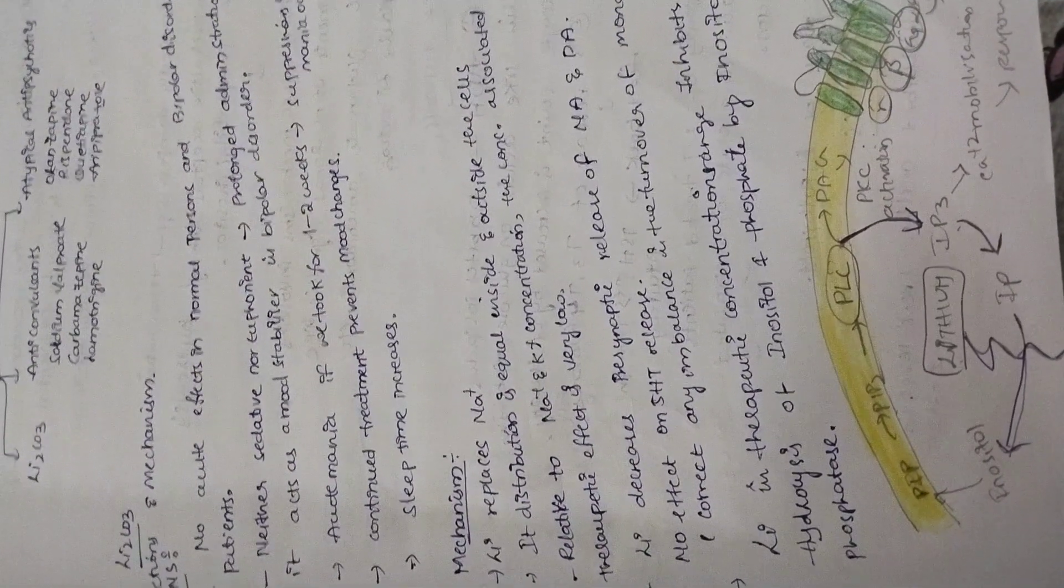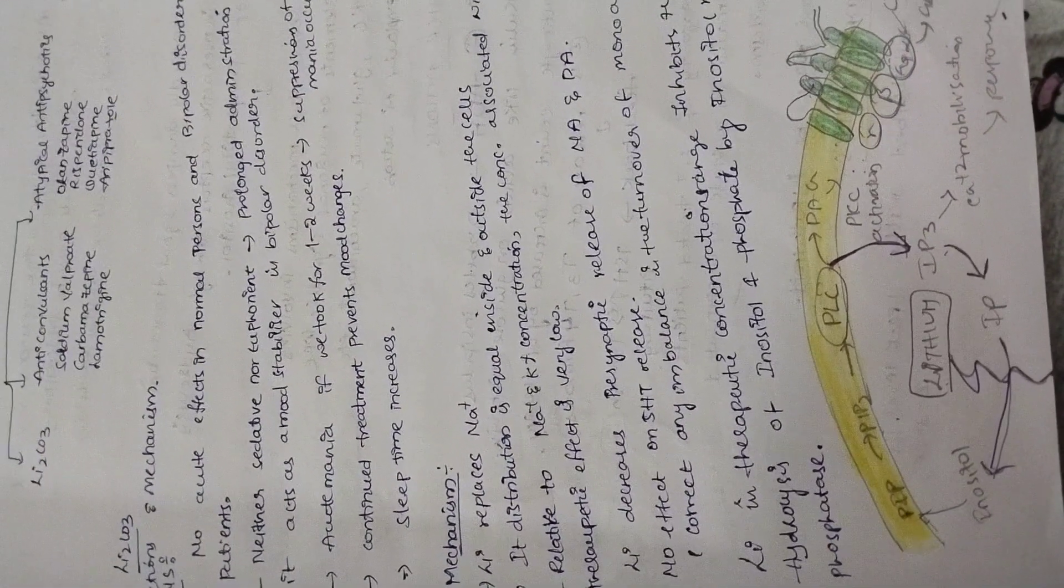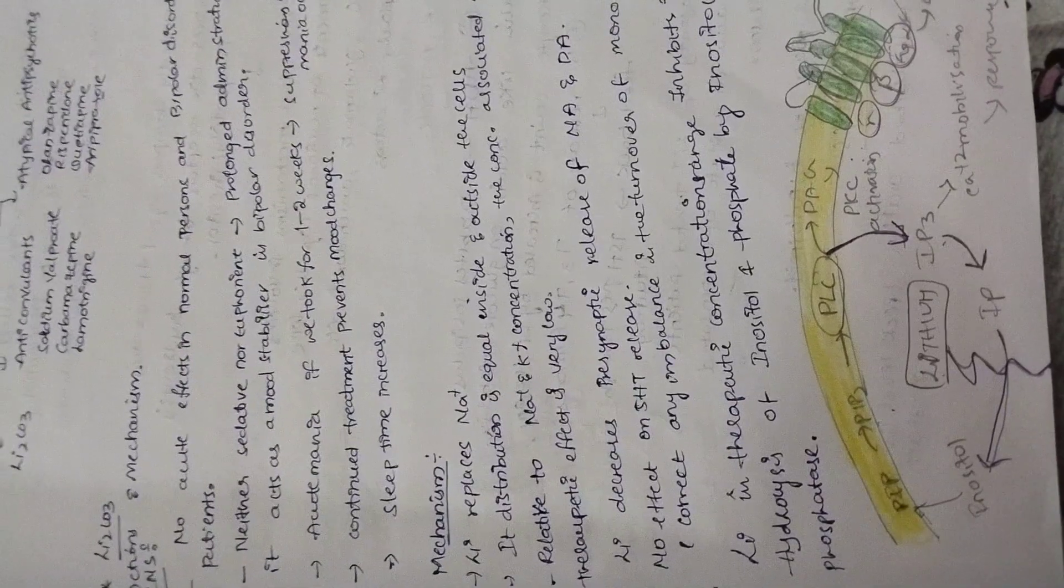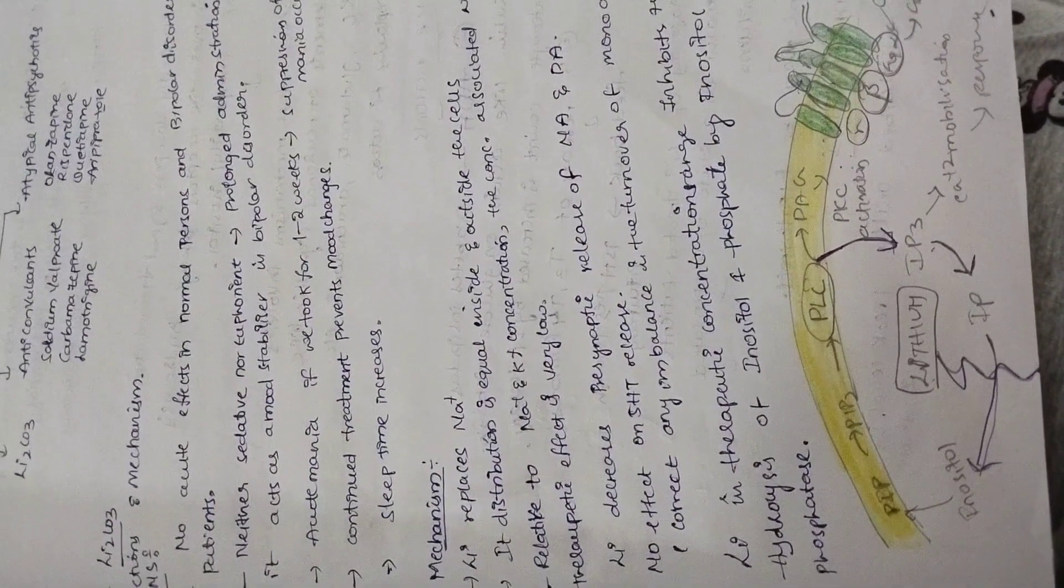Lithium decreases the presynaptic release of noradrenaline and dopamine, but no effect is seen on 5-HT release. It is balanced in maniac condition, an equilibrium is maintained with lithium. Lithium in therapeutic concentration, therapeutic range, 0.5 to 0.8 milliequivalent per liter, inhibits the hydrolysis of inositol 1-phosphate.